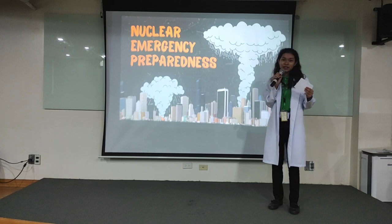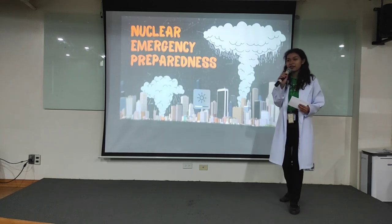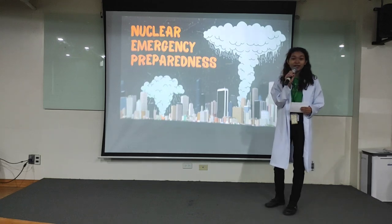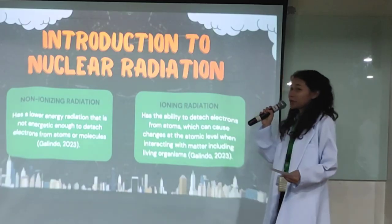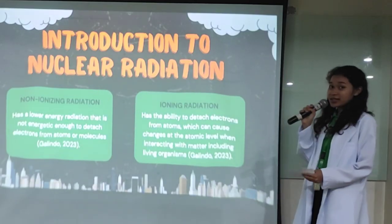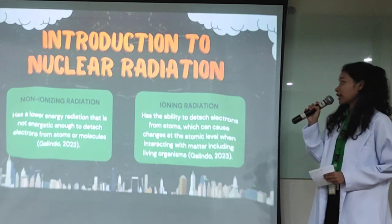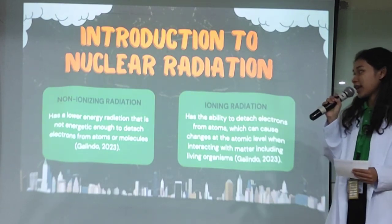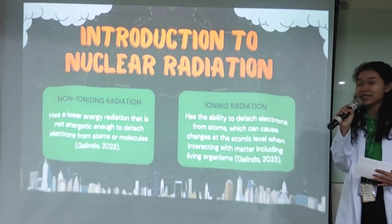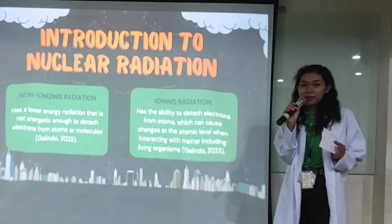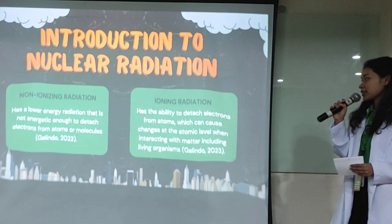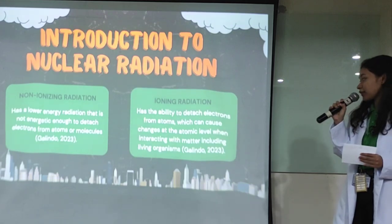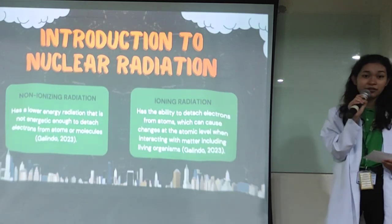First and foremost, it is crucial that we garner our understanding of the explanation of why this disaster happens. Therefore, I now introduce you all to nuclear radiation. There are two types of nuclear radiation. First, non-ionizing radiation — it is a lower energy radiation that is not energetic enough to detach electrons from atoms or molecules. Meanwhile, ionizing radiation has the ability to detach electrons from atoms, which can cause changes at the atomic level when interacting with matter, including living organisms.